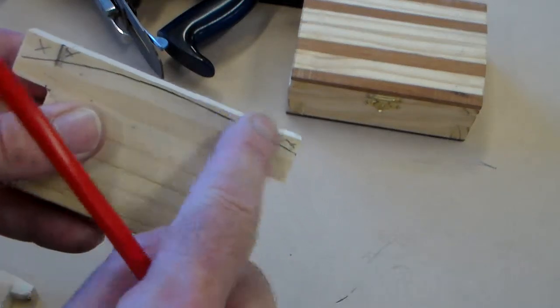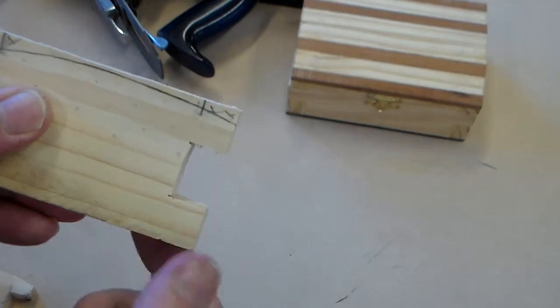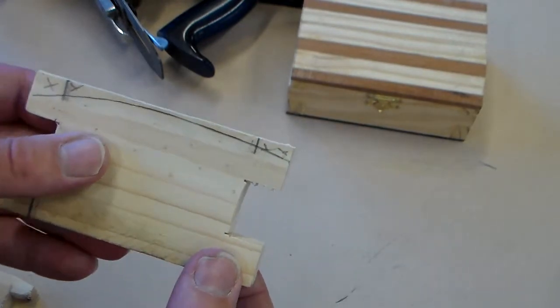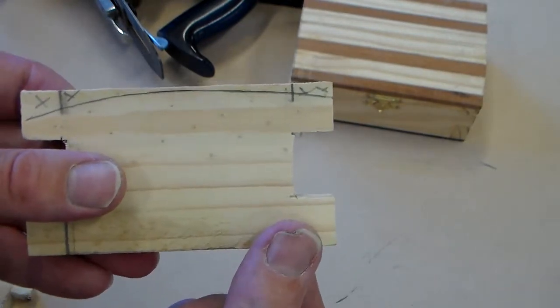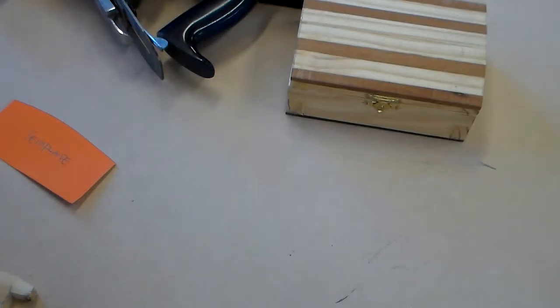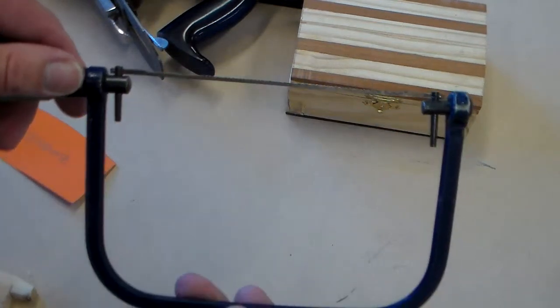Once we've drawn that and we've drawn it on both ends, then the next stage is to cut that out. Now we can cut that out using the Hegner saw or if you like we can use a coping saw.